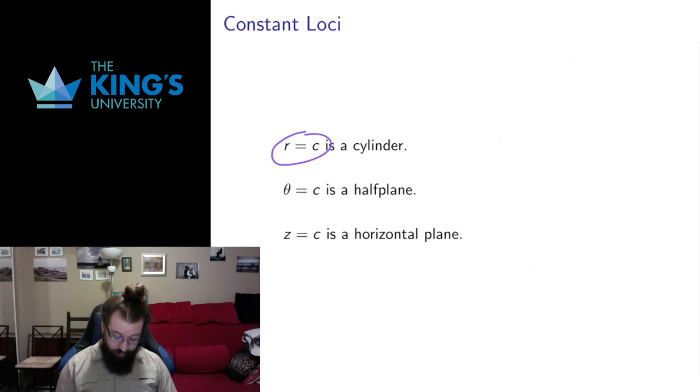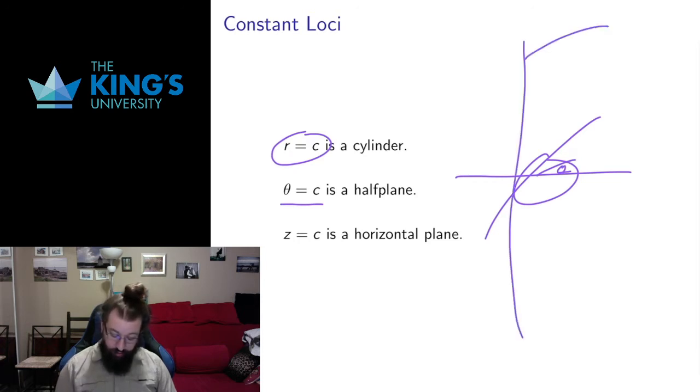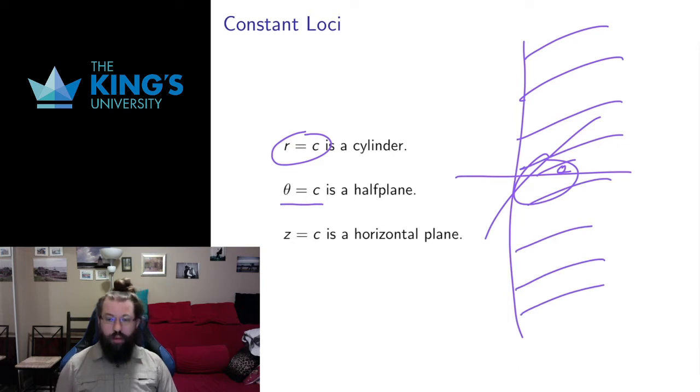If I look at instead theta to be a constant, well that means that in the xy plane in the circle I have a fixed angle here. But I'm allowed to have any z above that. So what I actually get from that is I get a half plane going out in this angle from the z-axis. So all the points, if you drop them down, would have angle theta, no matter how far they are from the axis, no matter how high they are up, gives us a half plane. And lastly, z is the same thing as Cartesian z. So z equals c just gives me a horizontal plane at height c. So I can think of the cylindrical coordinate system as describing these half planes, these horizontal planes, and these cylinders.